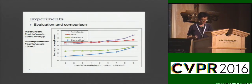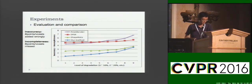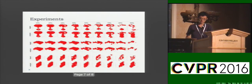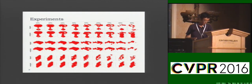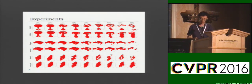The results show that our method achieves the best performance because we exploit both geometric information and multi-view consistency, instead of only relying on local information. Here are some of the results from our model. Notice how we can recover the 3D shape despite large degradation in the input.